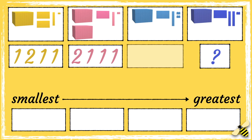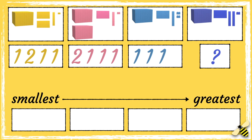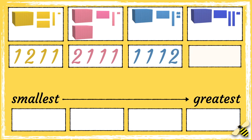Now let's look at the blue group. The blue group has one thousand, it has one hundred and it has one ten. Now let's look at the purple group. The purple group has one thousand, it has one hundred, it has two tens and it has one one.